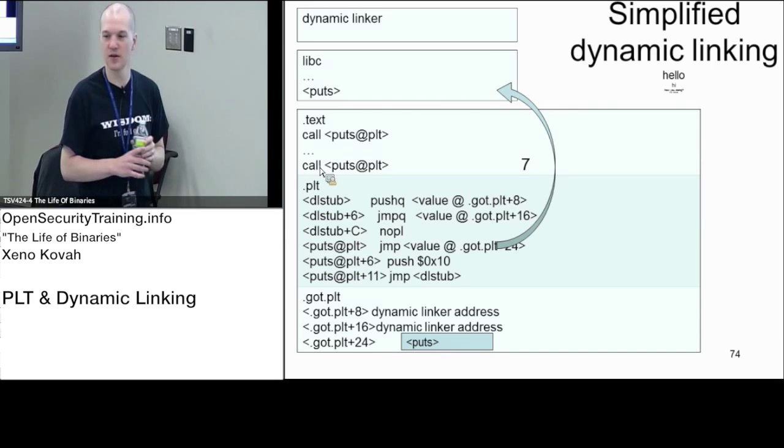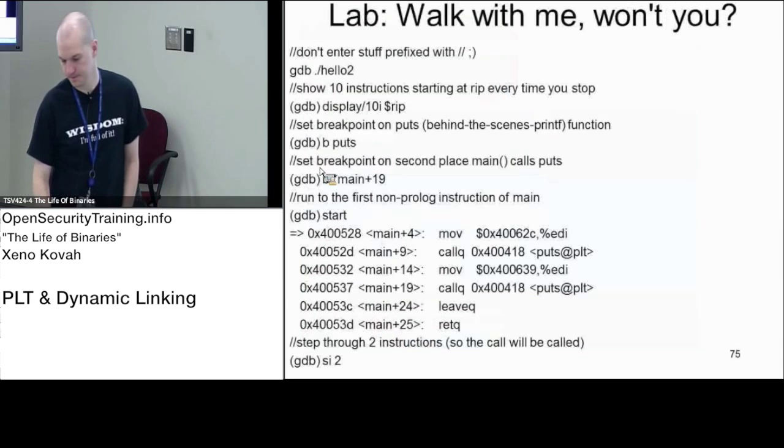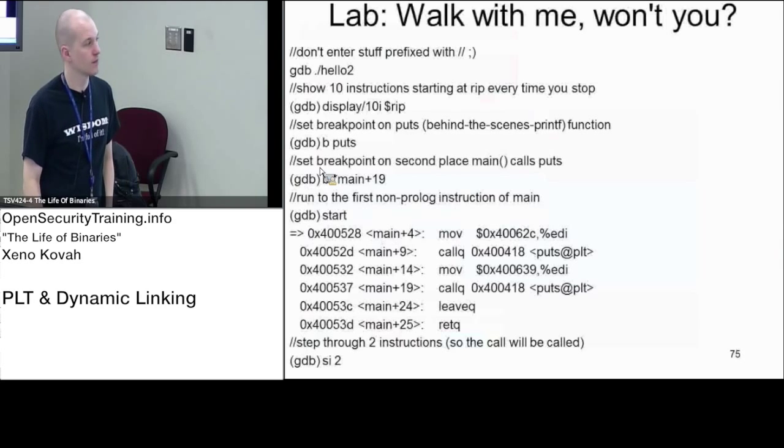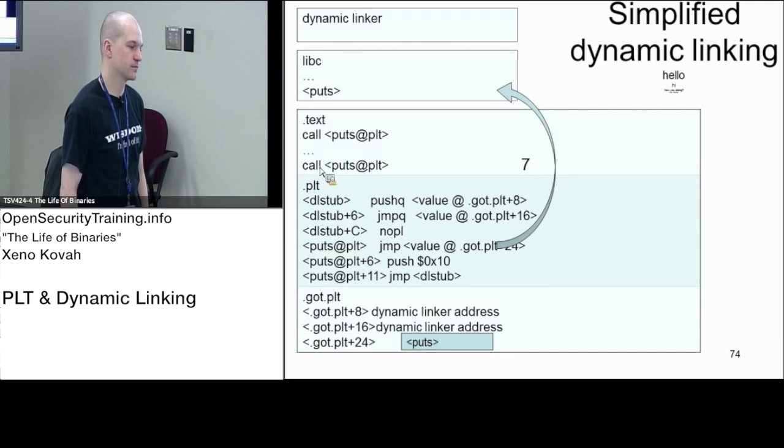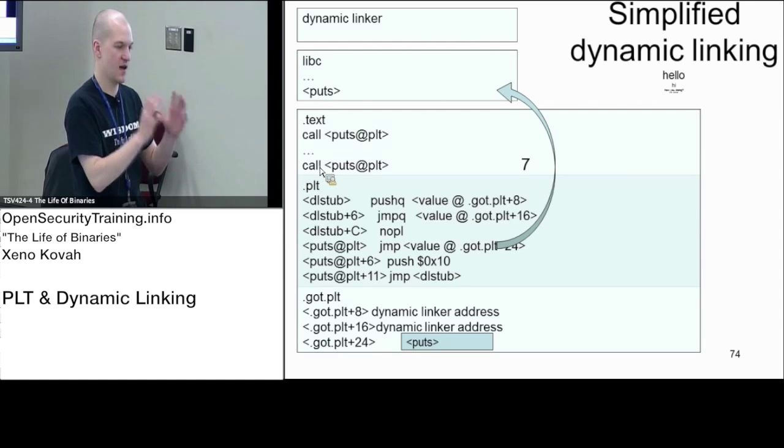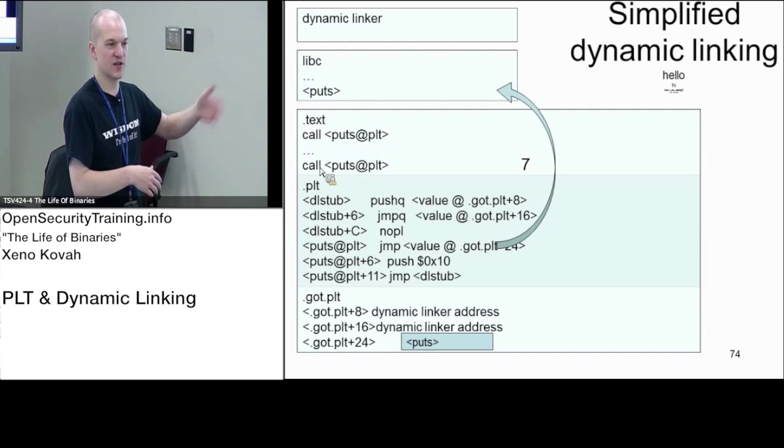So the first time around you run around through stub code and dynamic linking code. Second time around you go directly to where you want to go. But the thing is, this is the default on Linux, whereas on Windows this is much less common. When I say it's more common on Linux, what I mean is this is the default, whereas on Windows it's an option but it's not the default. So if you're just default compiling on Windows, you've got this import address table that the OS loader fills in everything at the very beginning and then it lets you run.